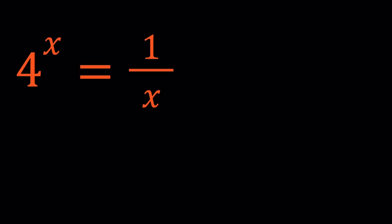So we have 4 to the x and 1 over x. First of all, I want you to notice that 4 to the power x is an increasing function, and 1 over x is a decreasing function. So what happens when an increasing function equals a decreasing function?